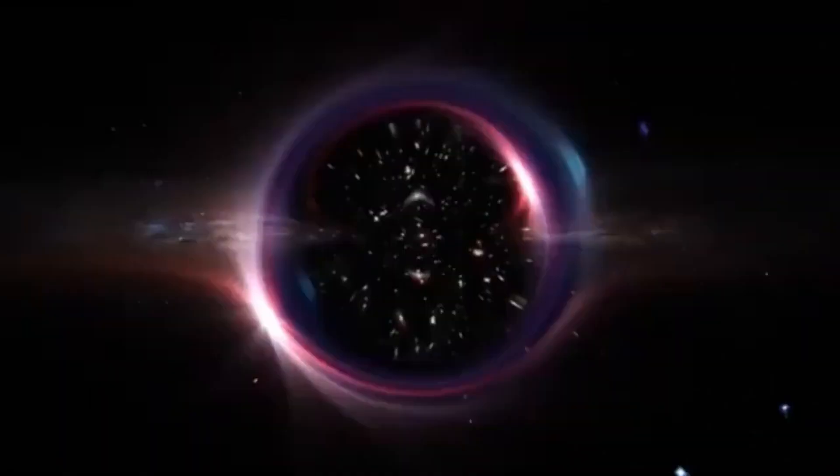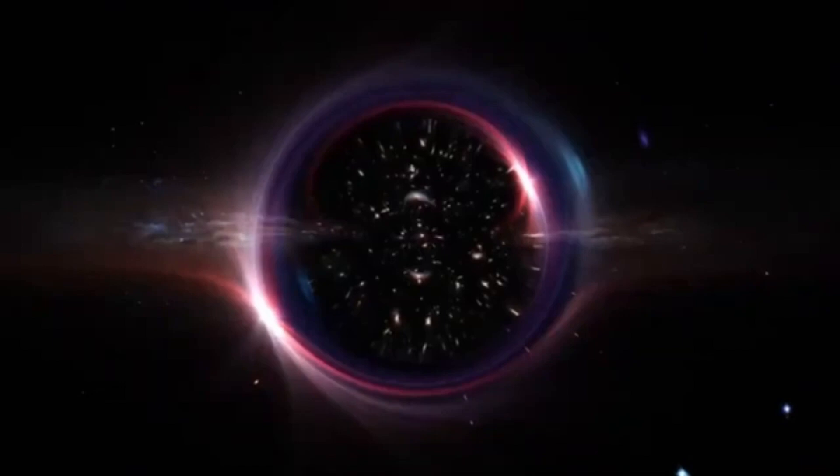This wasn't a one-off. Betelgeuse is a pulsating variable star, its brightness ebbing and flowing like a cosmic heartbeat. Its outer layers expand and contract in cycles, some short around 185 days, others stretching over 2,300 days.